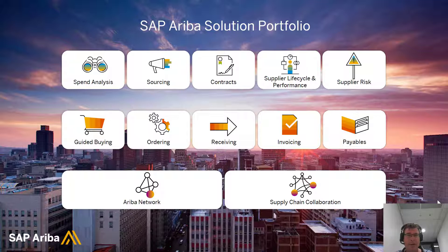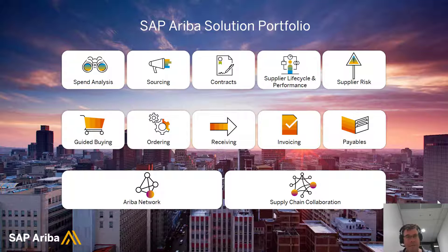Let's talk about Ariba. Ariba is our procurement platform. It has spend analysis to tell us what we're spending our money on, sourcing to go out to our vendors to make sure we get the right prices, and turning those sourcing events into contracts to ensure compliance. We can use catalogs to drive compliance within the organization, and supply lifecycle performance to look at vendor performance and risk — taking external feeds to see if we have any risks associated with our vendors. The real power is the Ariba network itself, with millions of vendors collaborating with millions of customers, including supply chain collaboration across purchase orders, forecasting, and all the different elements we need.